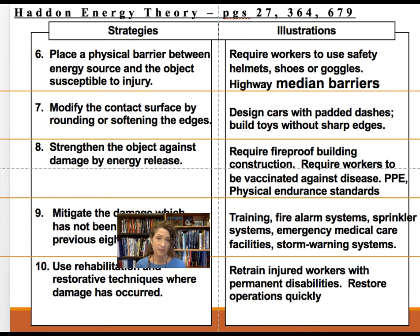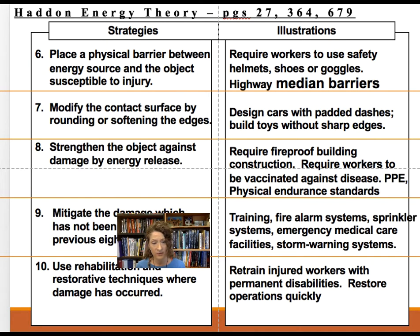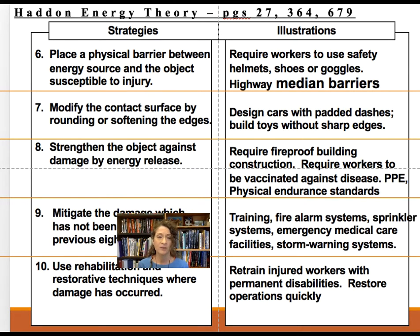Rule six is to put a physical barrier up. In lockout-tagout, we have some kind of barrier between people and the zone, so only the people performing the operation are able to enter. Rules one through six are all pre-event strategies.